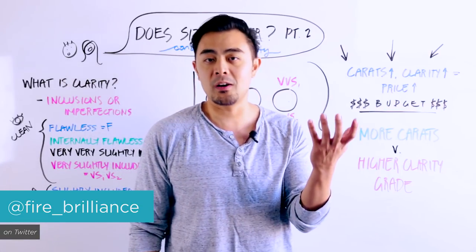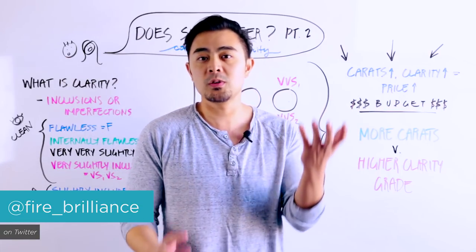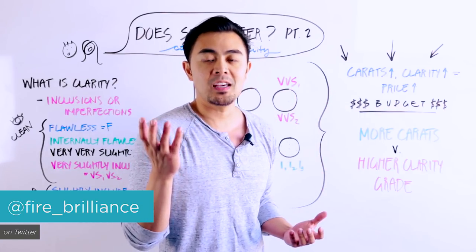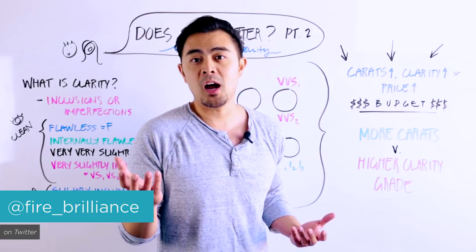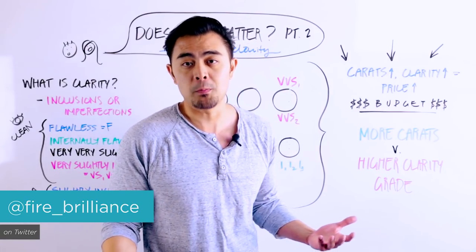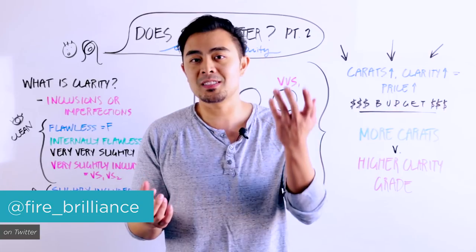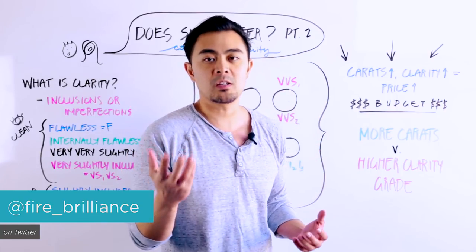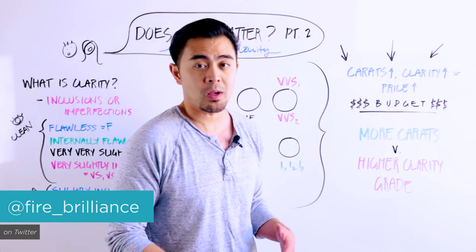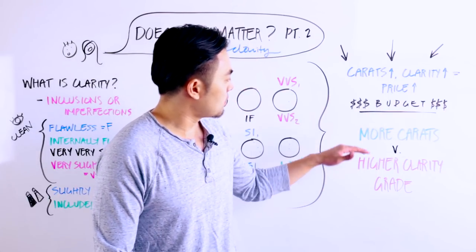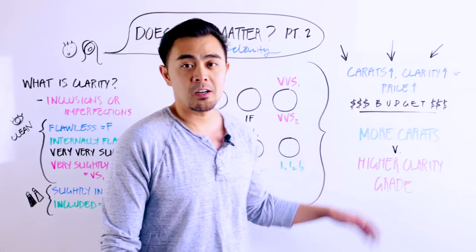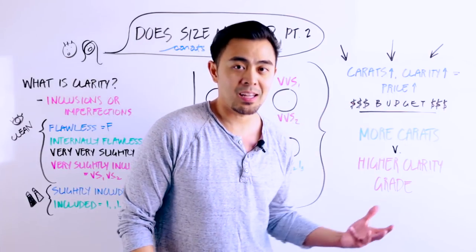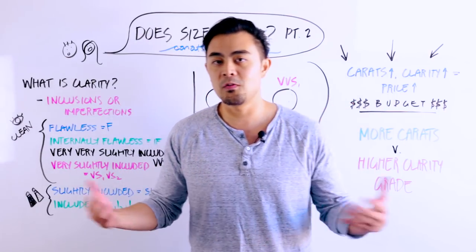So maybe instead of going with a two carat flawless or a two carat heavily included stone, you may want to go with a one and a half carat VS1. That might be the better option if you want to meet right in the middle. That's what most people will do. They want to have a nice enough size but at the same time have a beautiful clarity grade so that it's not so heavily included that's extremely noticeable. So that's how it will affect your budget. The more carats versus the higher clarity grade, that's up to you. Some people like heavily included stones, some people do not like heavily included stones and therefore they have to meet in the middle.